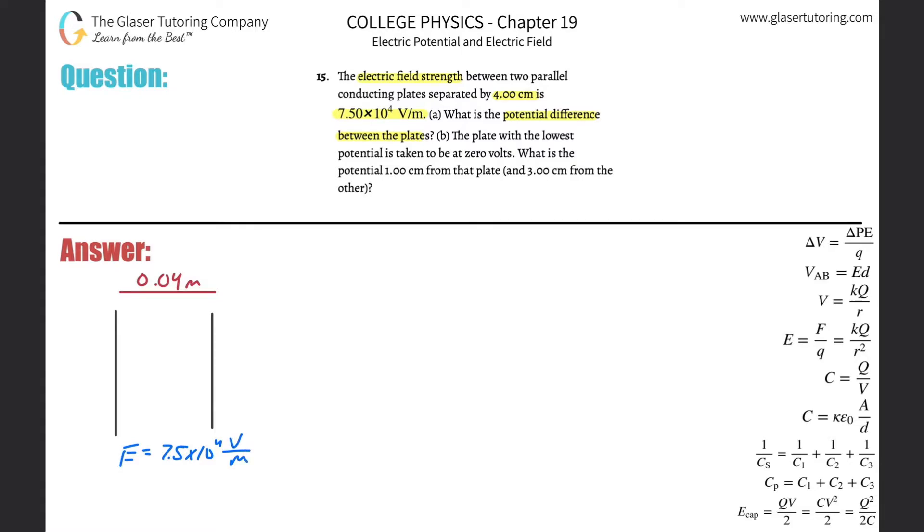And it wants to know the potential difference between those two plates. In other words, it wants to know the voltage between those two plates, so the voltage between plate A, we'll call it here, and plate B. All right, so we need a formula. So we know that the voltage between the two plates, or two points A and B, will be equal to then the electric field strength between those two plates or points multiplied by the distance between those two plates or two points.